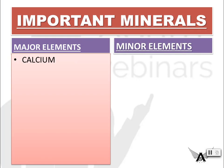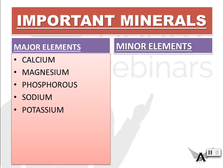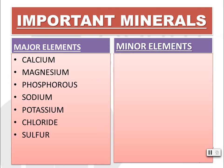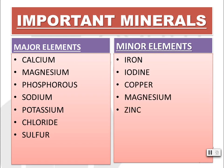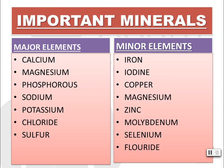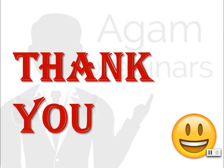Important minerals are classified as major elements and minor elements. Major elements include calcium, magnesium, phosphorus, sodium, potassium, chloride, and sulfur. Minor elements include iron, iodine, copper, zinc, molybdenum, selenium, and fluoride.